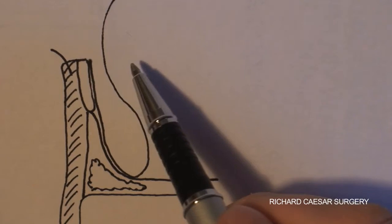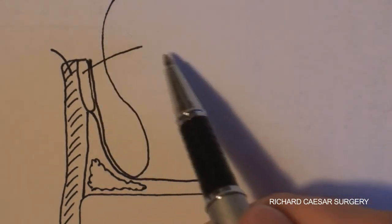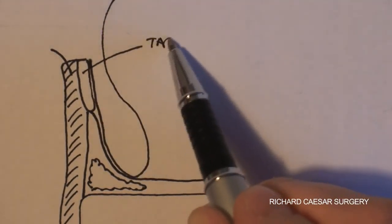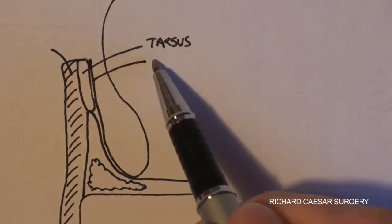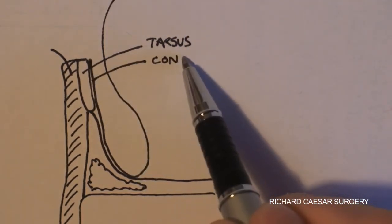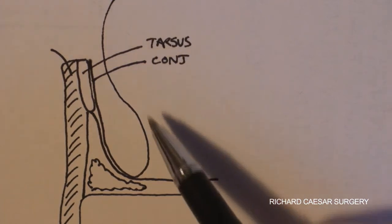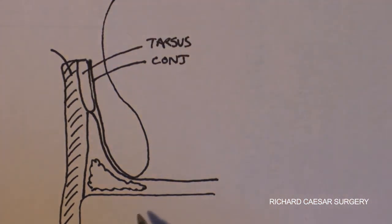So if you're going to label it up in sequence: the tarsal plate, the conjunctiva, the bone.